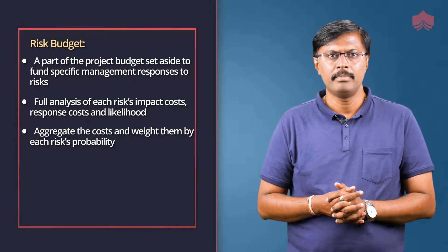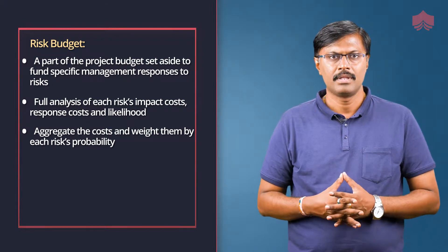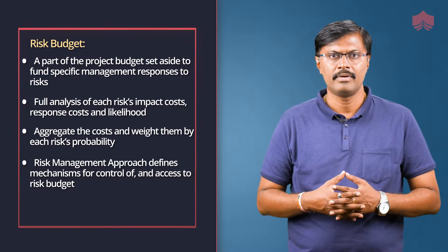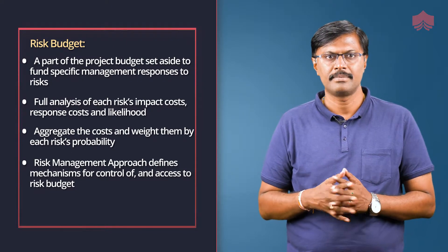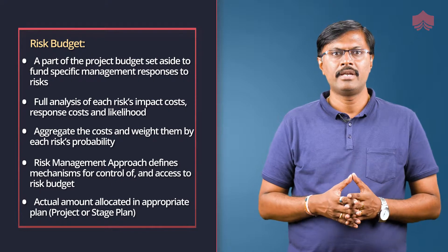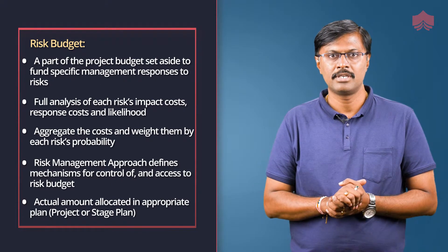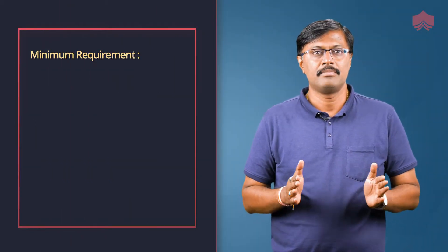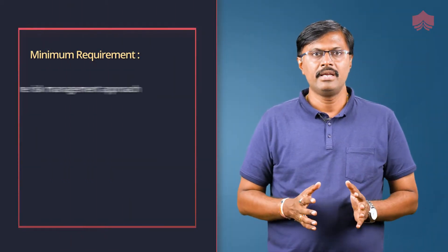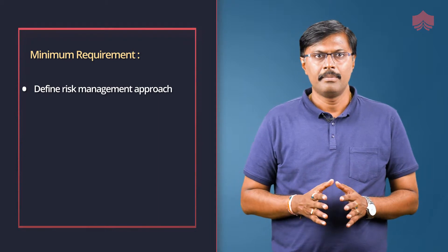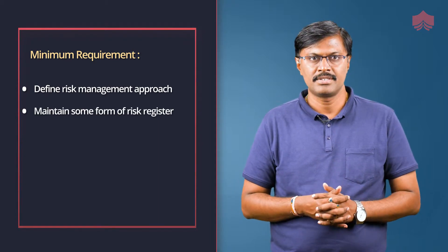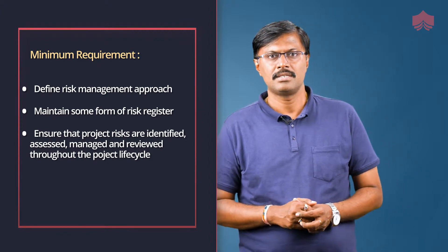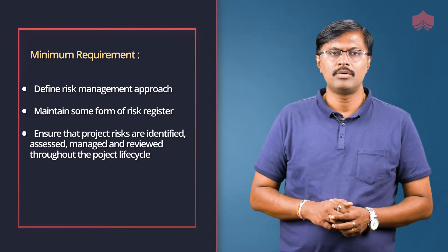Full analysis of each risk's impact cost, response cost and likelihood should be performed. Aggregate the costs and weigh them by each risk's probability. The risk management approach defines mechanisms for control of and access to the risk budget, with the actual amount allocated in the appropriate plan, such as the project plan or stage plan. PRINCE2's minimum requirements for the risk theme are: defining a risk management approach, maintaining some form of risk register, and ensuring that project risks are identified, assessed, managed and reviewed throughout the project lifecycle.